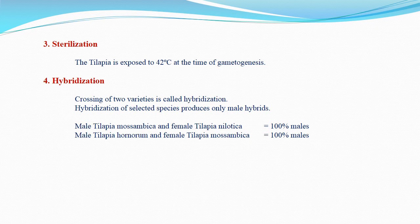The fourth method is hybridization. The crossing of two varieties is called hybridization, and the resulting offspring is called a hybrid. Hybridization of selected species produces only male hybrids. For example, when male Tilapia mossambica and female Tilapia hornorum are crossed, the resulting hybrids are 100% male. Similarly, when Tilapia hornorum males and female Tilapia mossambica are crossed, the hybrids produced are also all males.